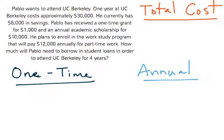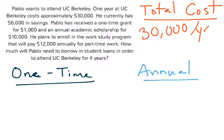It says Pablo wants to attend UC Berkeley. One year at UC Berkeley costs $30,000. So over here in the total costs, I know it's going to be $30,000 per year.